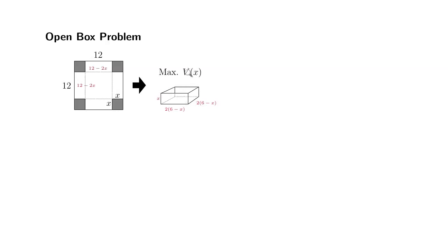Alright, so in order to find the volume function of this open box, all you have to do is multiply all three dimensions together. So we want to maximize this volume function. So it's 2 times 2 gives you 4, X is there, and 6 minus X times 6 minus X gives you 6 minus X squared.